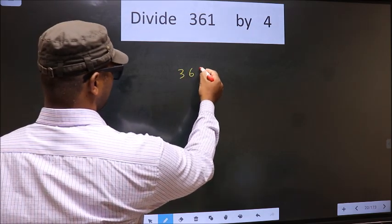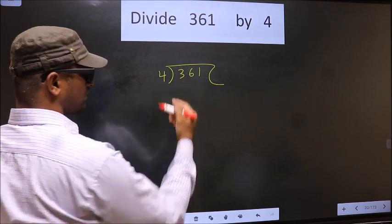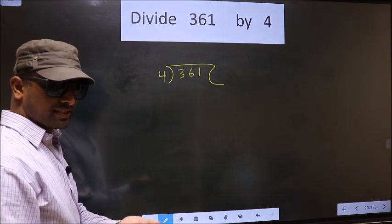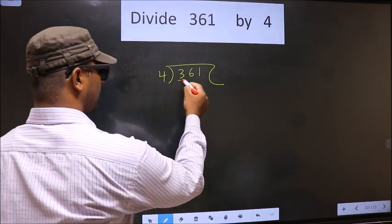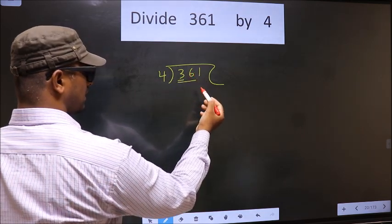That is 361, 4. Okay. Next. Now, here we have 3. 3 is smaller than 4. So, we take two numbers that is 36.